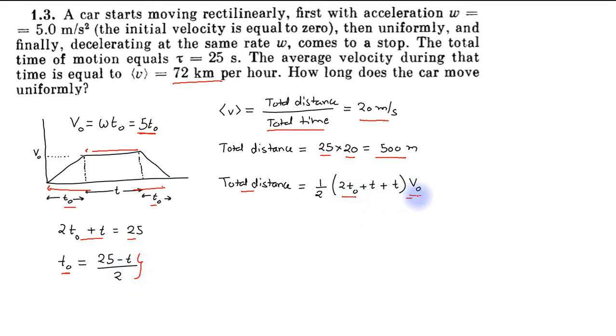Putting the value of t₀ and v₀ in this equation and making it equal to 500 meters, we have 500 equals half times (25 minus t plus t plus t) into 5t₀, where 5t₀ is the value of peak velocity v₀.